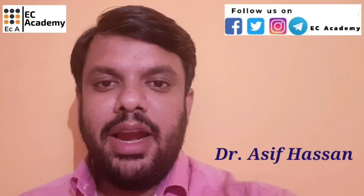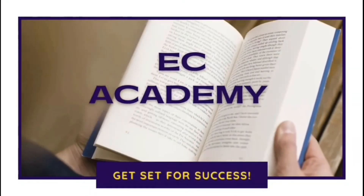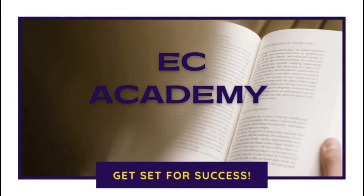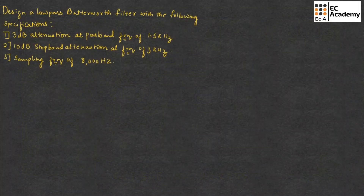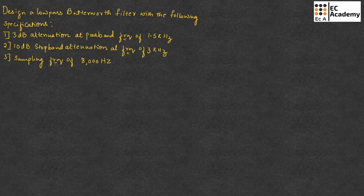Hello friends, welcome to ESA Academy. In this lecture, let us understand a problem on low-pass filter design. We need to design a low-pass Butterworth filter with the following specifications: 3dB attenuation at passband frequency of 1.5 kHz, 10dB stopband attenuation at frequency of 3 kHz, and sampling frequency of 8000 Hz.